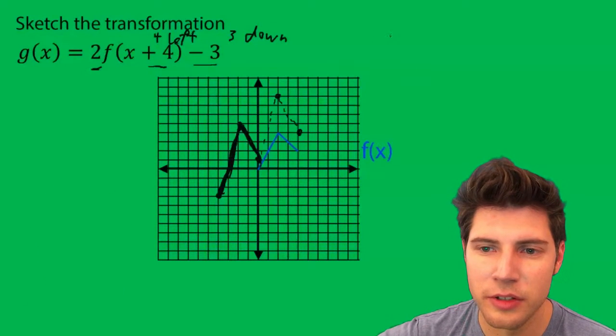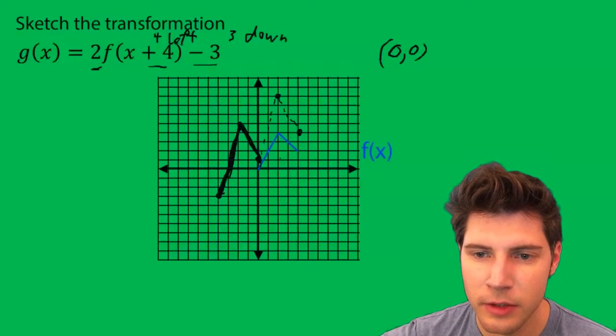The other way we can do this is with points. So we start with 0, 0, 2, 4, 2, 4, and 4, 2.